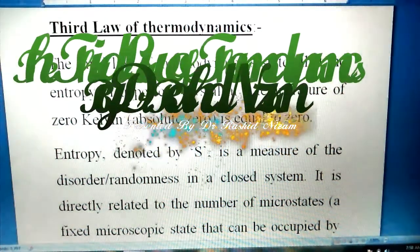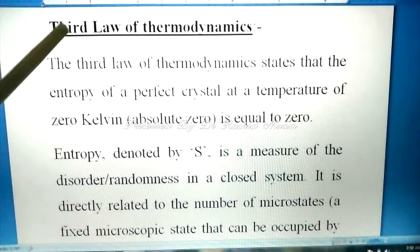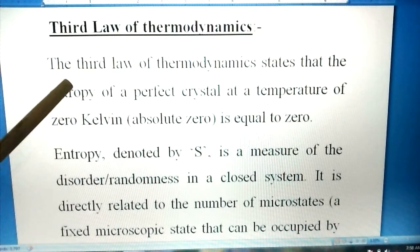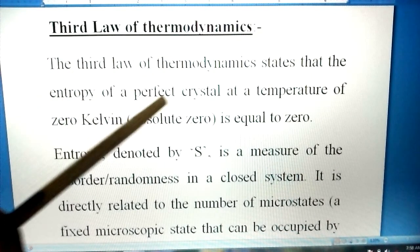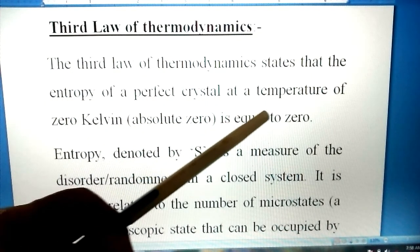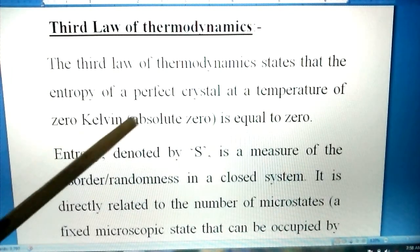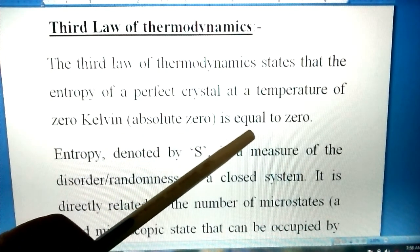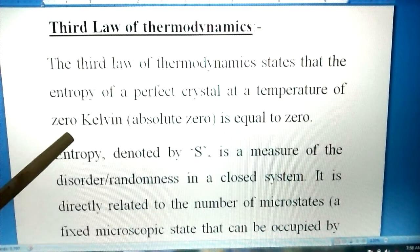Hello everybody, today we will discuss the third law of thermodynamics. The third law of thermodynamics states that the entropy of a perfect crystal at a temperature of zero Kelvin (absolute zero) is equal to zero.